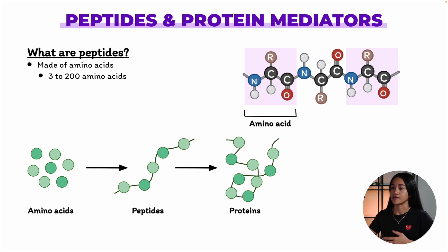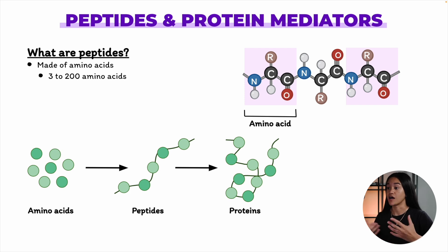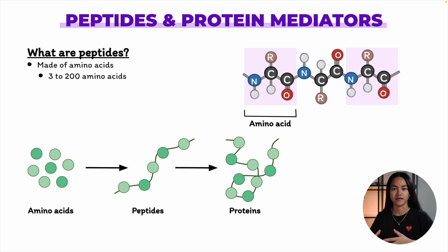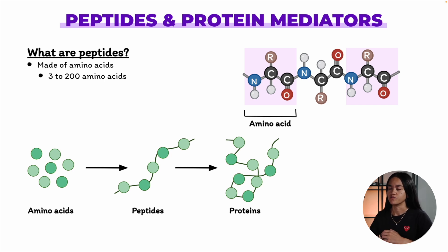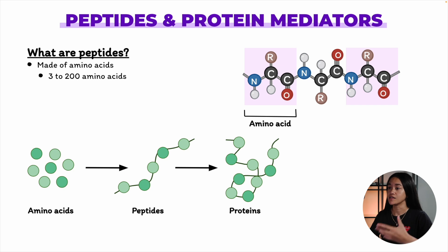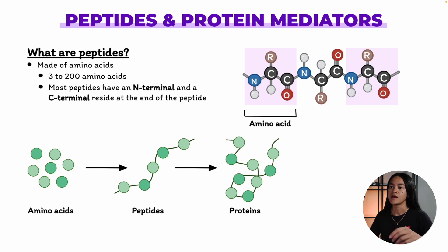Some are as short as three amino acids, while others may have disulfide bonds or form partial cyclic shapes. And one key feature of most peptides is that they have an N-terminal and a C-terminal residue at each end.